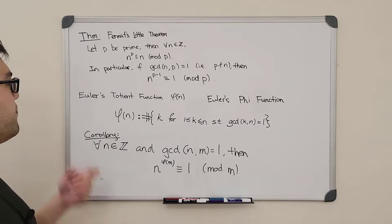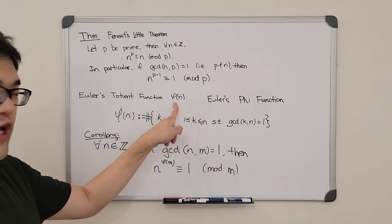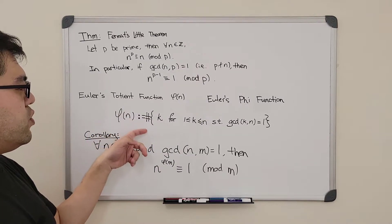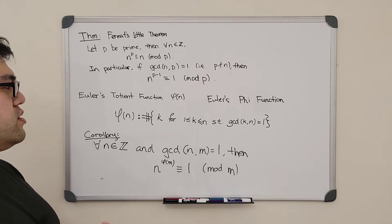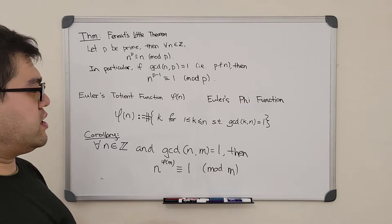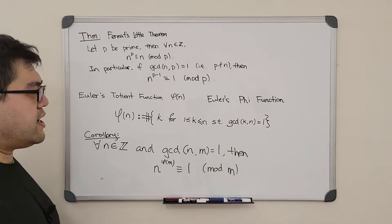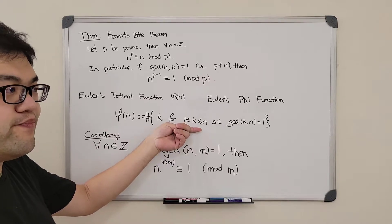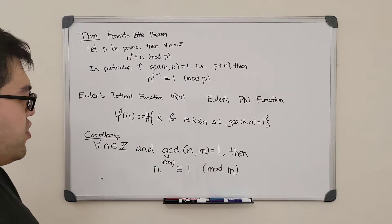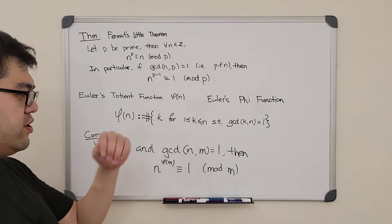I'll also introduce two extra pieces of information that follow from Fermat's Little Theorem. First, I'd like to talk about Euler's function, also known as Euler's phi function, because we denote it with phi of n — phi being the Greek letter in lowercase. We define phi of n as the number of natural numbers less than or equal to n such that k and n have a gcd equal to one, meaning they are coprime, or relatively prime to each other. For small n we can use counting to find phi of n, and for larger n we generalize with another expression.